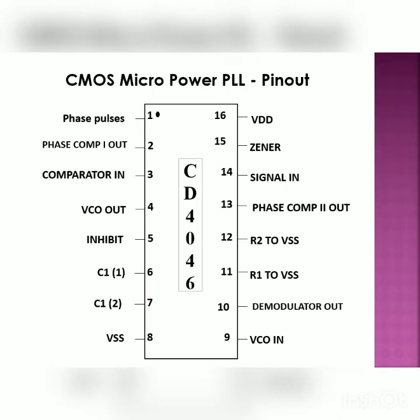The CD4046B is a 16-pin IC available in DIP package. Pin 1 is phase pulses output, used with phase comparator 2 to indicate lock condition. Pins 2 and 13 are the outputs of phase comparator 1 and phase comparator 2 respectively. Pin 3 is the comparator input. Pin 4 is the VCO output. Pin 5 is the inhibit pin for minimizing power consumption.